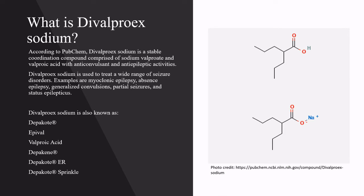According to PubChem, Divalproex sodium is a stable coordination compound comprised of sodium valproate and valproic acid with anticonvulsant and antiepileptic activities. Divalproex sodium is used to treat a wide range of seizure disorders. Examples are myoclonic epilepsy, absence epilepsy, generalized convulsions, partial seizures, and status epilepticus.